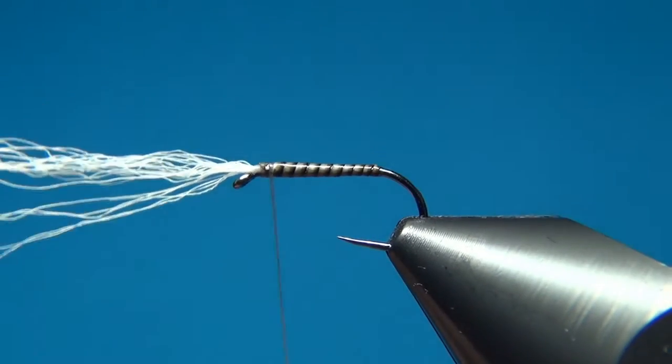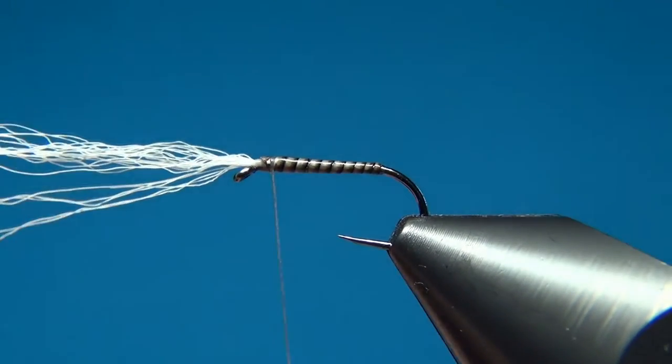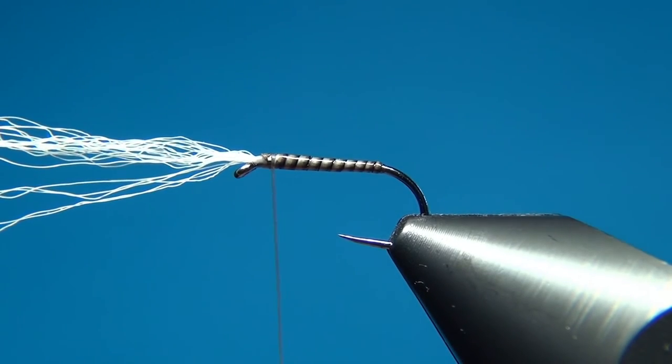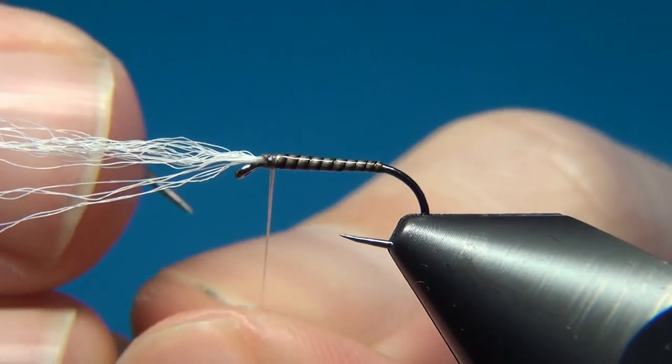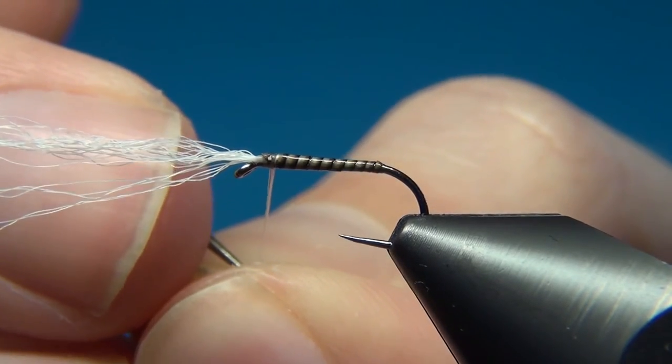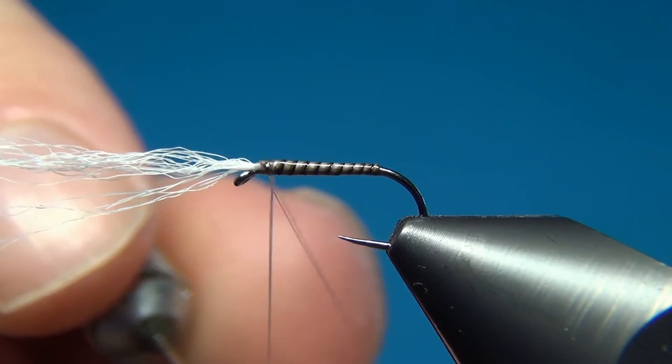And to apply this, I'm going to use the split thread technique. This is to spin your bobbin counterclockwise. And then once it's flat, you can come in with your dubbing needle and split the thread in two.